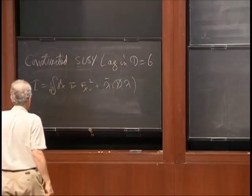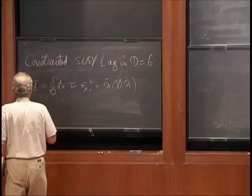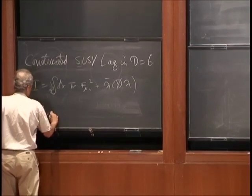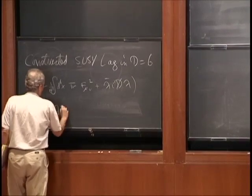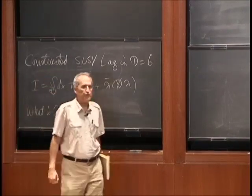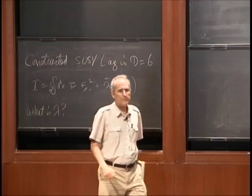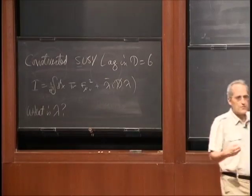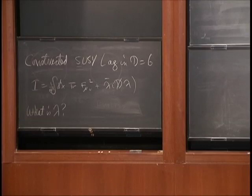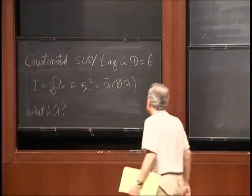The first question we might ask is: what is lambda? What I told you was that in dimensions 3, 4, 6, and 10, lambda was a Fermi field in the adjoint representation with the minimum possible number of components. But I'd like to be a little more specific about that now.